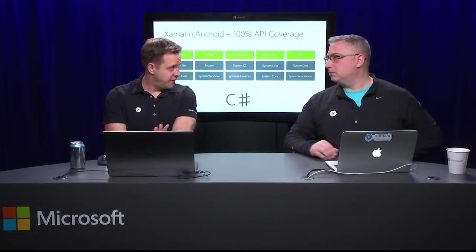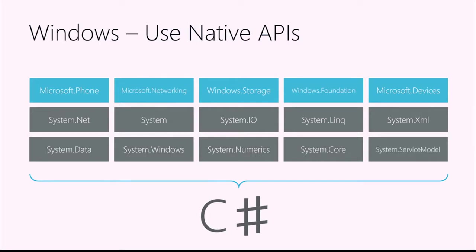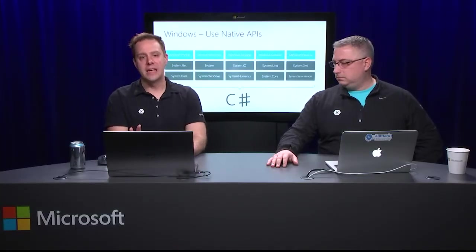100% API coverage is true for iOS, Android, and Windows — and Windows uses C# natively. You also have access to those .NET APIs as well, giving you advanced features: memory management, garbage collection, and all the things we love about .NET. In mobile, using async and await in .NET is amazing for making sure we don't block the user interface. C# has async and await which makes it dead simple. Also things like LINQ, generics, and all the great C# 7 features.